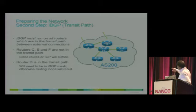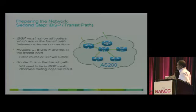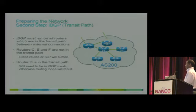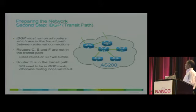In this particular example, A and B are obviously transits. But in case the link between A and B goes down, D is also a transit. C, E, and F are not really transits in this case — which means they do not really need the full internet routing table. But A, B, and D have to have the full internet table if this network is going to become a transit.